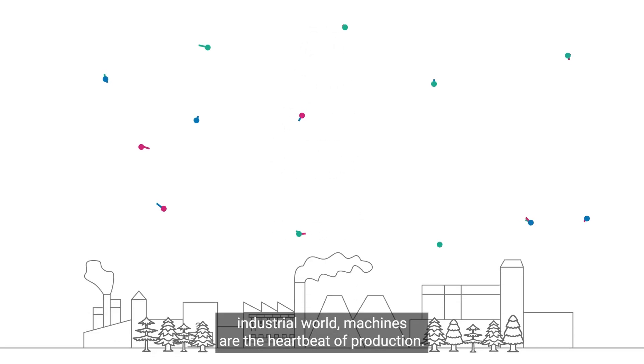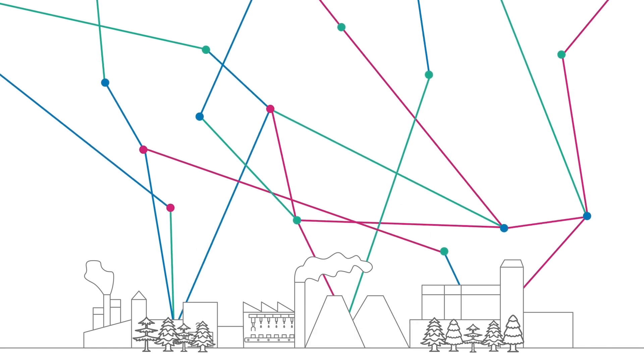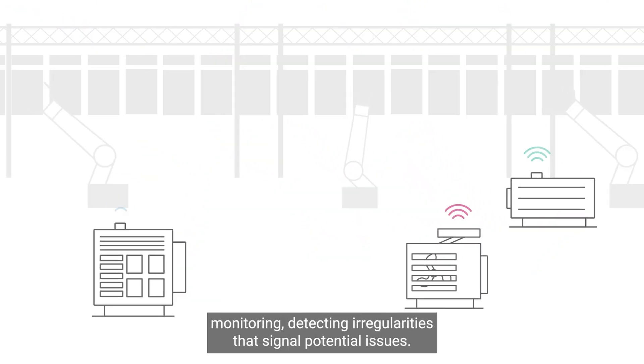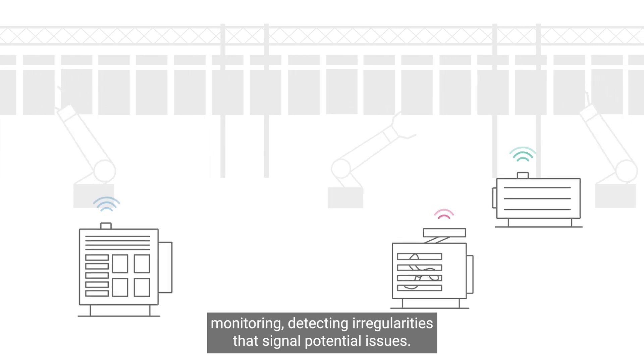In today's industrial world, machines are the heartbeat of production. Their constant vibration is the pulse we monitor through condition monitoring, detecting irregularities that signal potential issues.